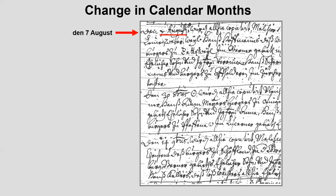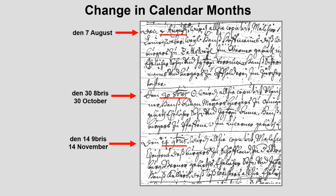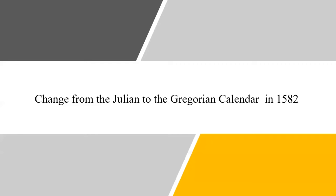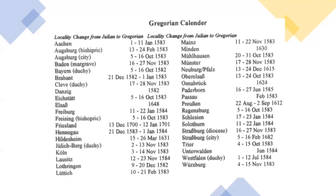Going back to the marriage record, the first entry is the seventh of August. The second entry, written as 30 Ocbras, is the 30th of October. The third entry, written as 14 Neumbras, is the 14th of November. One major issue resolved by the Catholic Church was the establishment of the Gregorian calendar in 1582. Catholic parishes changed to the new calendar as soon as they learned of it, but it took time for the information to reach every parish, and the majority of Protestants did not accept it until after 1700. This chart — another handout for this lecture — shows the various localities and areas when they began using the Gregorian calendar.